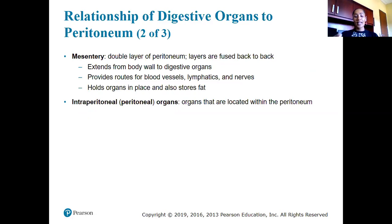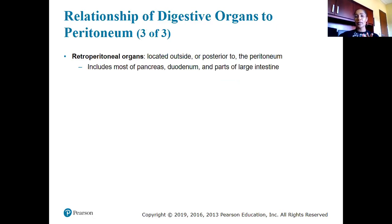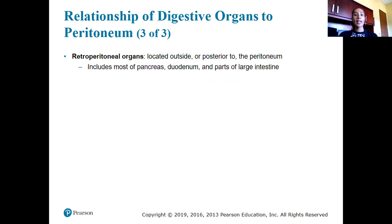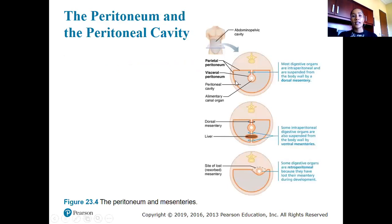Depending on where organs are situated in the peritoneal cavity, we classify them further. Intraperitoneal or peritoneal organs are located within the peritoneum. Retroperitoneal organs are located outside or on the posterior side of the peritoneum, and these include the pancreas, the duodenum, and parts of the large intestines.